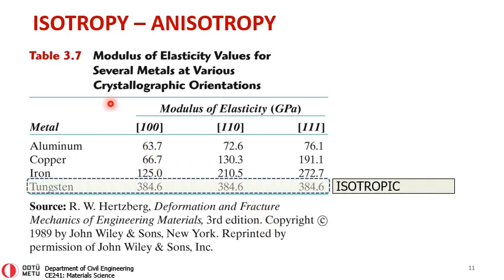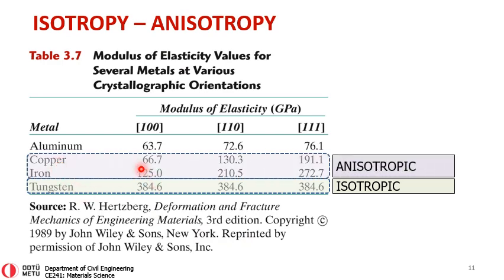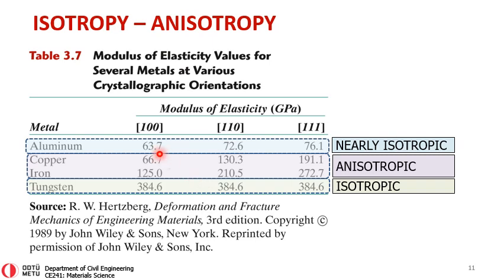Here I am showing modulus of elasticity values for several materials — aluminum, copper, iron, and tungsten — tested in [100], [110], and [111] directions. Tungsten has the same modulus of elasticity in all three directions, so it is termed an isotropic material. Copper and iron have quite different moduli depending on direction, so they are considered anisotropic. Aluminum's values are quite similar across directions, so it can be called a near-isotropic material.